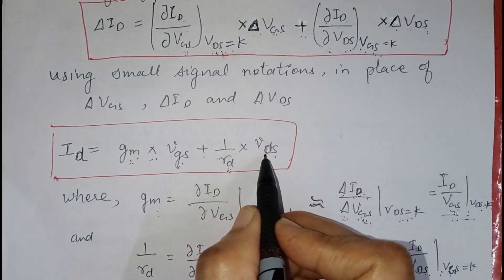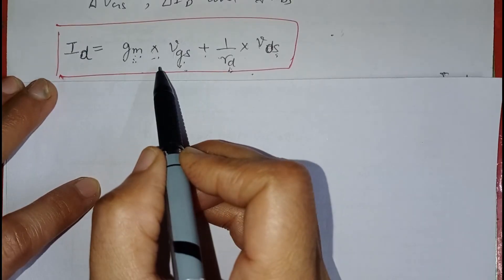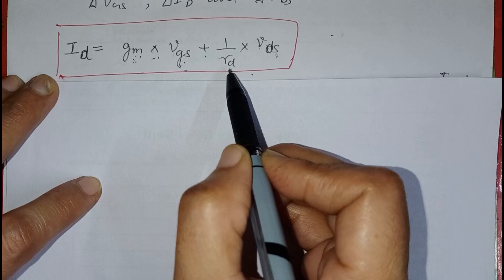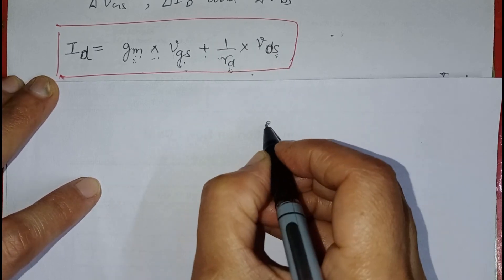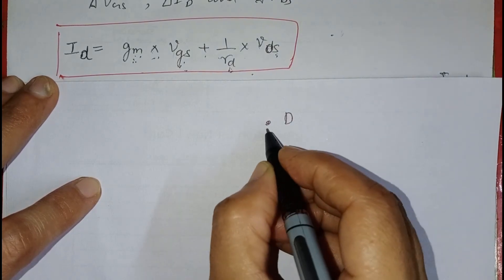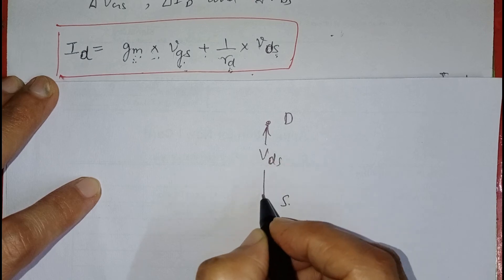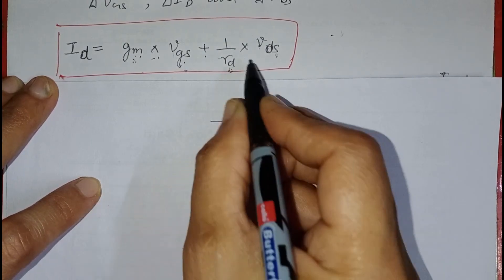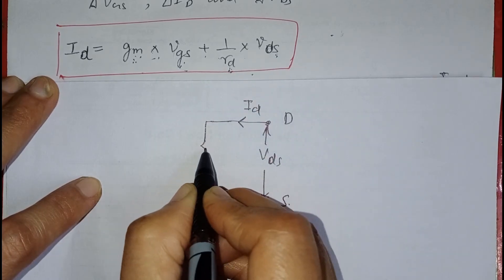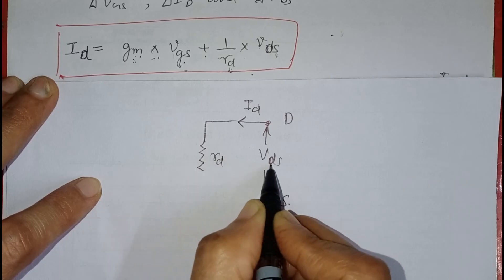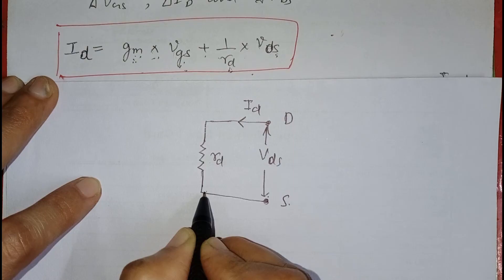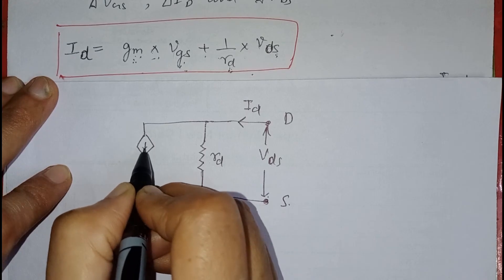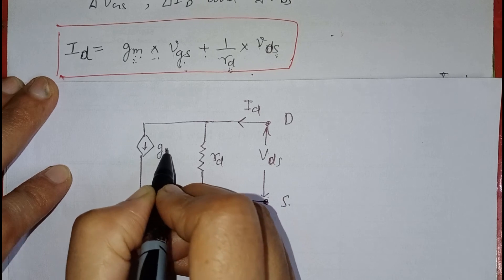The first term of this equation represents a current source or current generator, and the second term shows that there is a voltage vds across the resistor rd. Starting from the drain terminal and the source terminal with voltage vds across them, the current ID flows and there is a voltage vds across rd. This rd is drawn with the voltage across it, and the dependent current generator is drawn as gm·vgs.